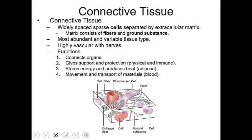Connective tissue can either be solid or calcified — bone is an example of that. It can be semi-solid — adipose tissue or fat tissue is an example. Or connective tissue can be liquid — blood is an example of a liquid connective tissue. What you're seeing in this image is a generic illustration of what a connective tissue looks like. Connective tissues, just like the name describes, are basically a filler — they keep everything connected within the body.